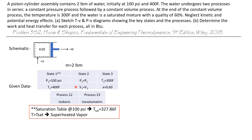Let's skip over state two for now because we were given very little about it. State three is at a temperature of 300 degrees Fahrenheit, so it's cooled off a bit from the original state, and it has a quality of 60%, so state three is a saturated mixture.